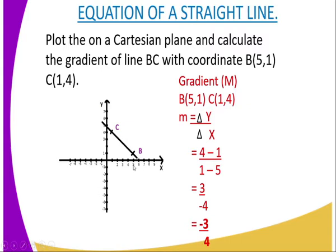You can see point B is located at (5, 1). Then you go and plot point C: that is 1 on the x-axis, and you rise up to 4 on the y-axis and place another point. The two points are then joined with a straight line, as you can see illustrated on this Cartesian plane.